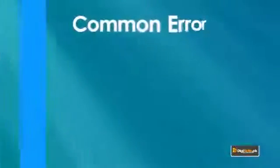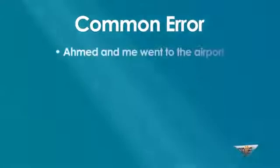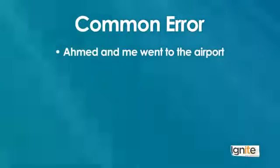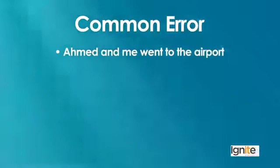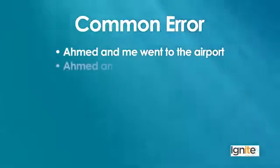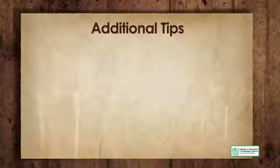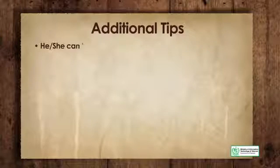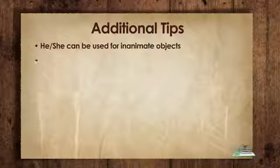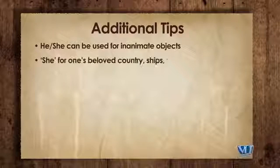جیسے یہاں پر 'ملکہ ترنم' یا 'the melody queen' بھی یوز کر سکتے تھے نور جہاں کے لیے — which is a name by which she is lovingly known۔ کچھ common errors: 'Ahmed and me went to the airport' — جب دو لوگ ہوں تو 'and me' نہیں یوز ہوتا۔ اس میں یوز ہو گا: 'Ahmed and I went to the airport۔' یہ ایک بالکل آسان giveaway ہے جس سے پتہ لگ جاتا ہے کہ کس کی English پر command بہتر ہے۔